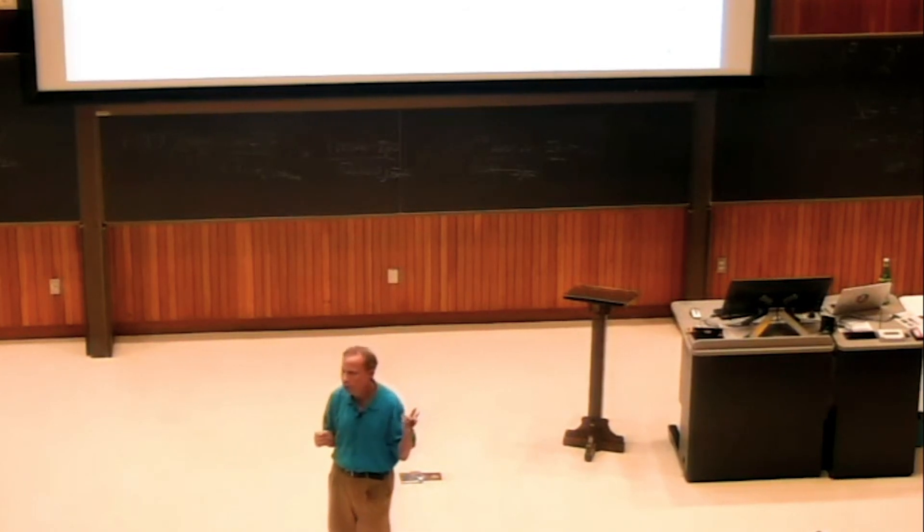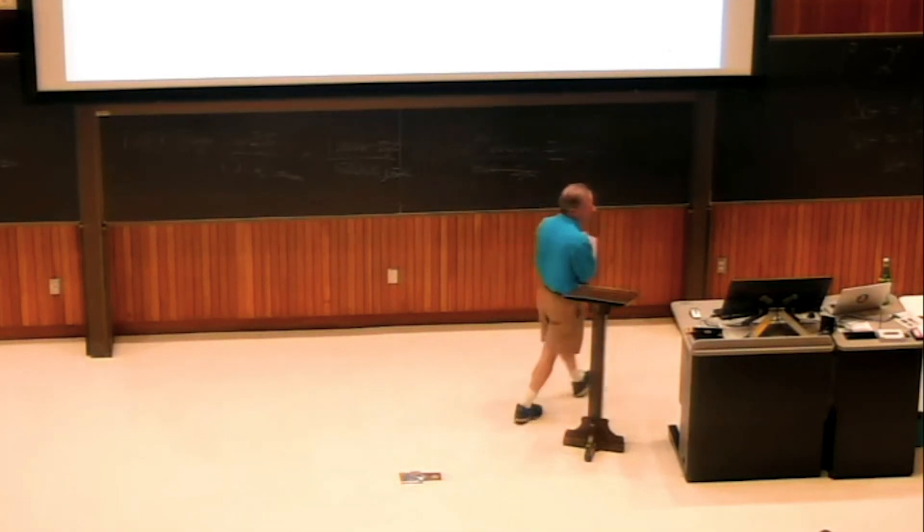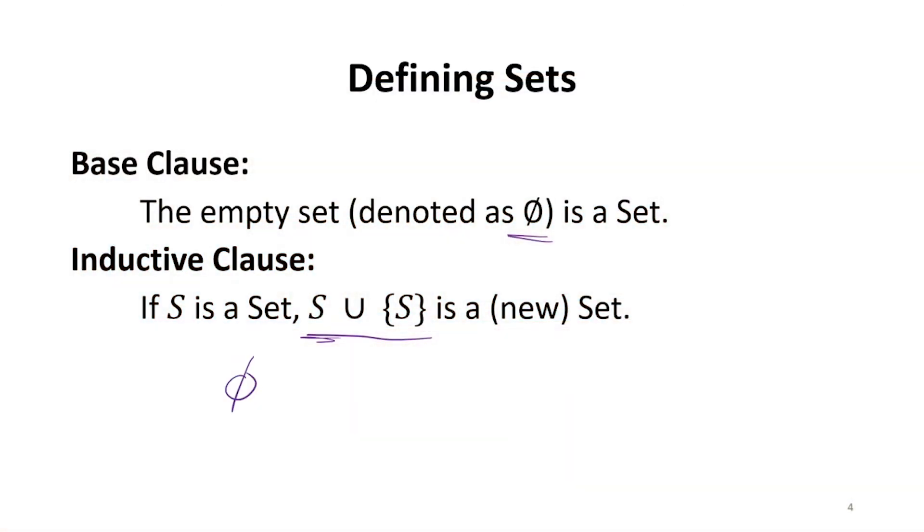If we think of these as a way to represent the natural numbers, so ∅ is a set. What's the next set going to be? Well, the only set we have at this point is ∅ as the empty set.